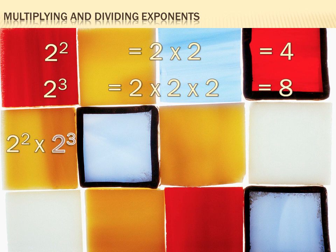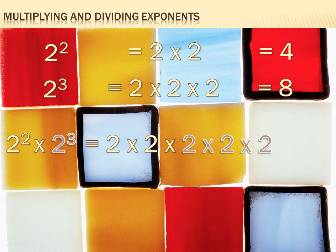Let's get tricky. What if I multiply 2 squared times 2 cubed — that's 2 to the second power times 2 to the third power. How would I do that? Well, 2 squared equals 2 times 2, and 2 cubed equals 2 times 2 times 2. So 2 squared times 2 cubed gives us five 2's — 1, 2, 3, 4, 5 — and it equals 32.